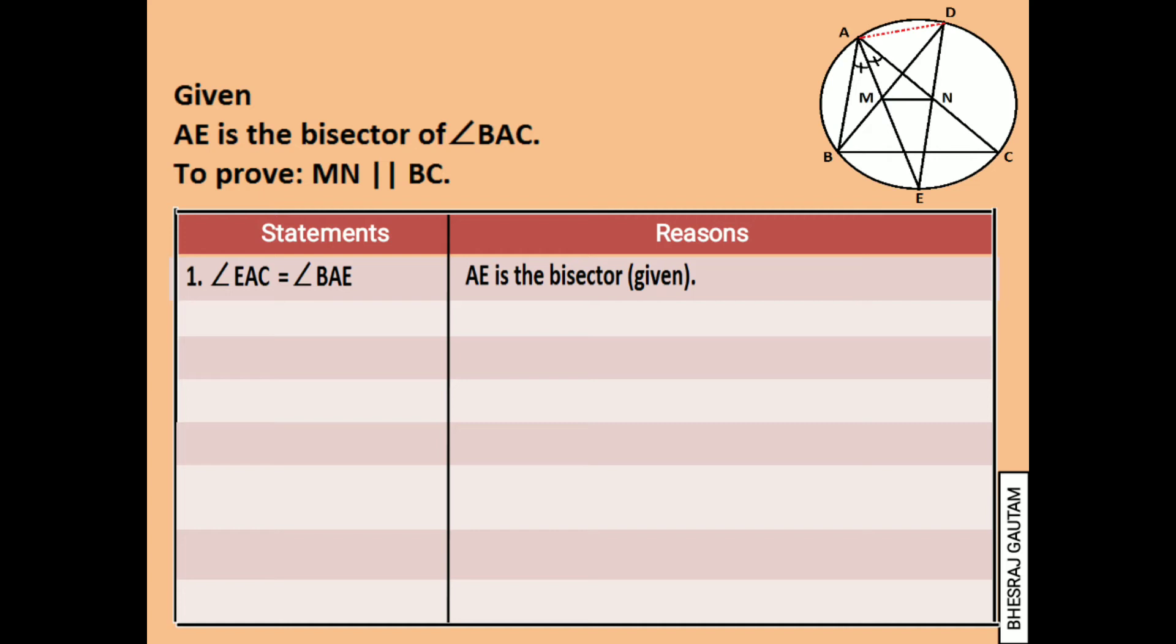Then two angles standing on the arc BE are angle BAE and angle BDE. So they are also equal, that is angle BDE is equal to angle BAE.